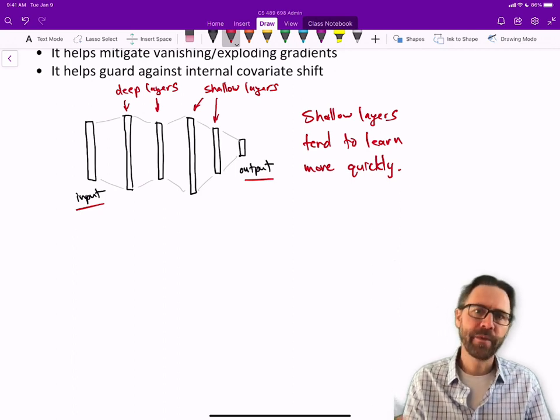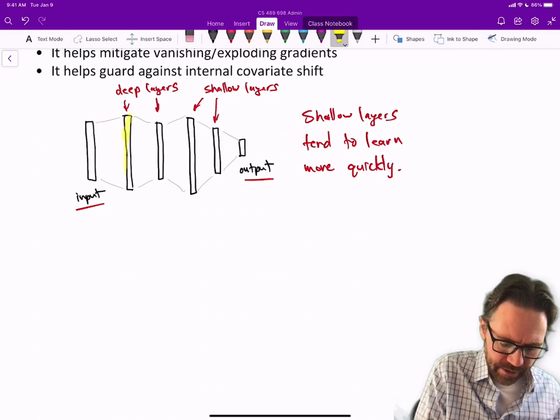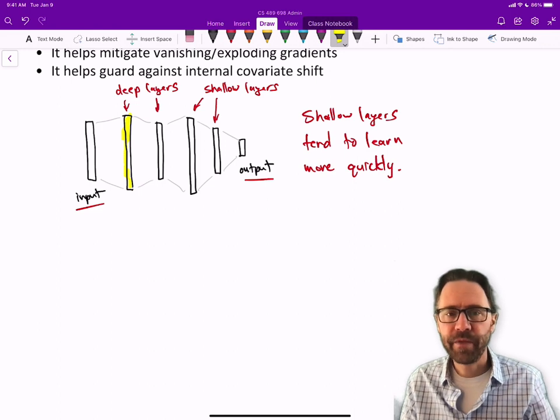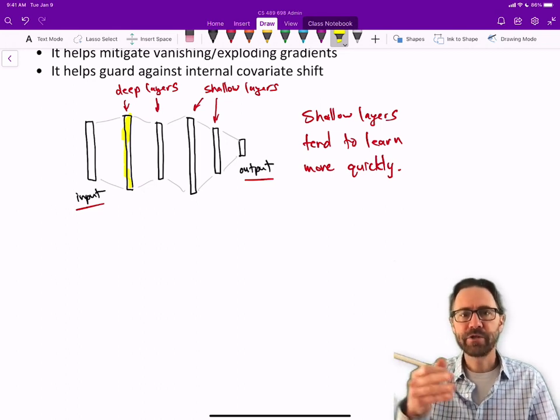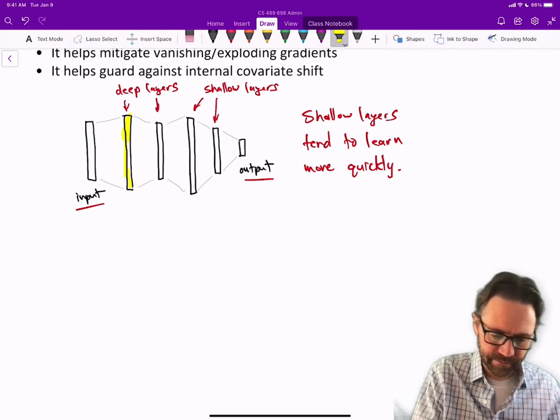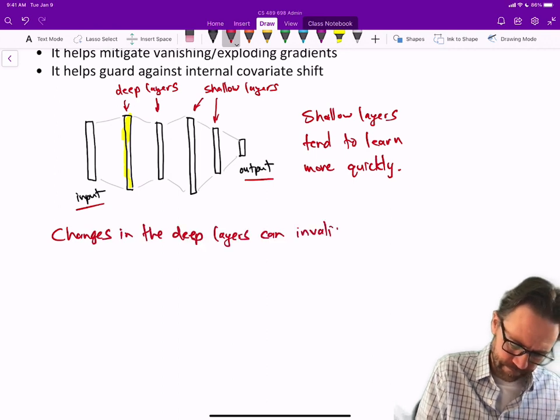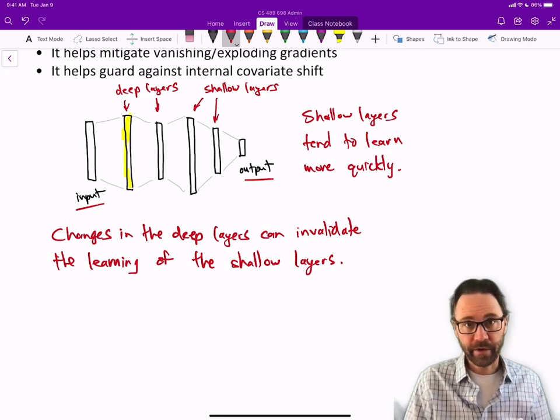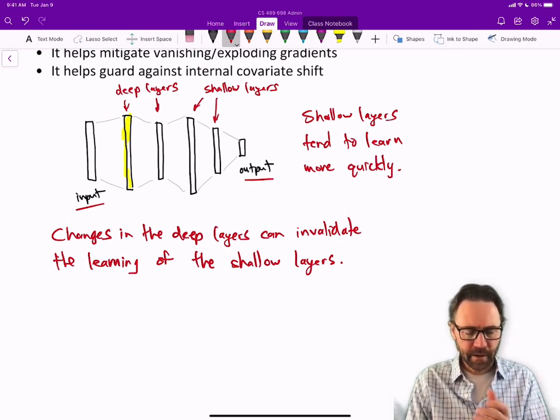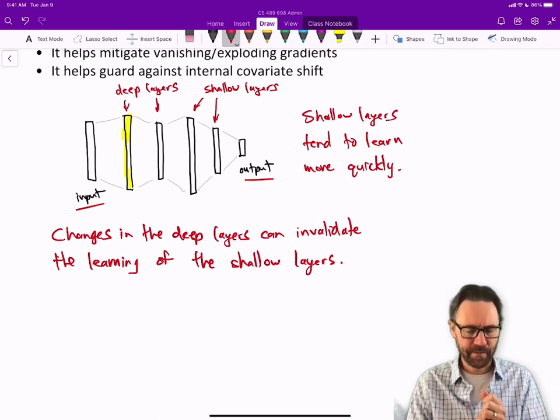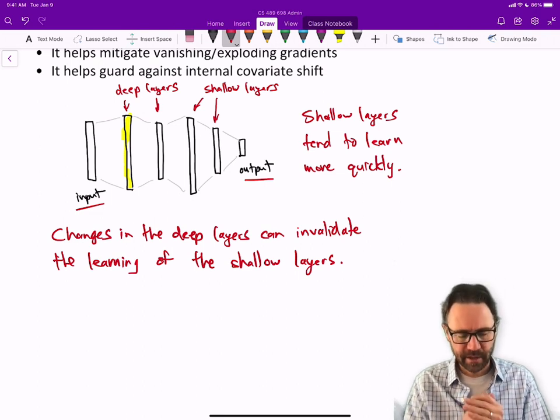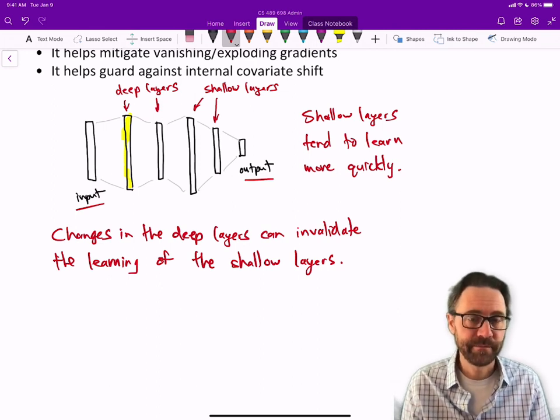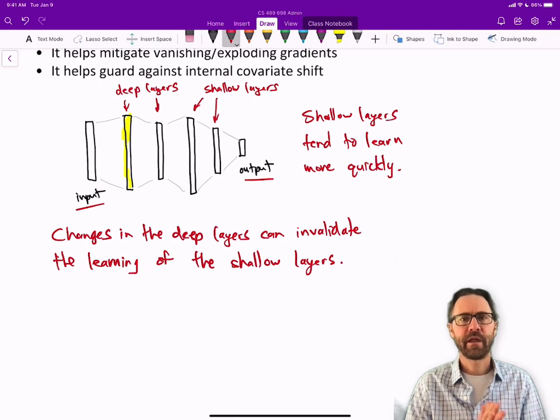The problem is, though these shallow or top layers learn fairly quickly and come up with a model to do their part of the solution, over time these lower layers can start to learn more and shift. That sort of invalidates the solution that was hit upon in these upper shallower layers. Changes to deep layers can invalidate the learning of the shallow layers. Then the shallow layers have to start all over again or you have to keep migrating. The idea is that batch norm would stop the deep layers from having a large shift in the scale of their output. Still an open question. So that is batch normalization, something that really helps accelerate neural learning.